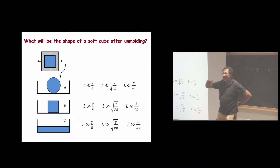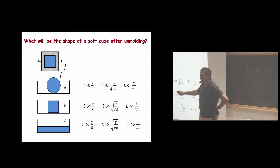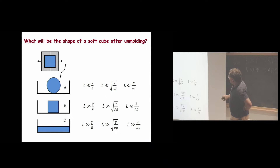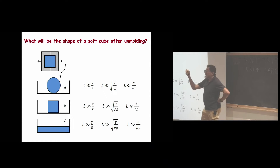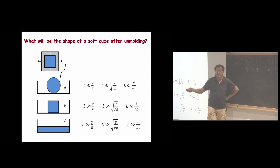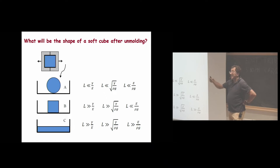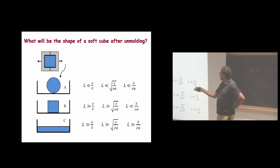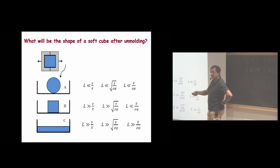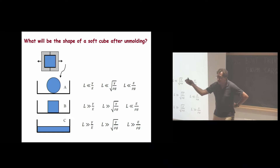Typical numbers for γ/E: surface tension γ is roughly 0.1 J/m². For a stiff solid with E ~ 1 GPa, γ/E ~ 1 Å — never observable. For an elastomer, γ/E ~ 100 nm. For a hydrogel with E ~ 1 kPa, γ/E ~ 0.1 mm — visible with good optics. Softer gels give even larger elastocapillary lengths. Experimental pictures confirm these effects.